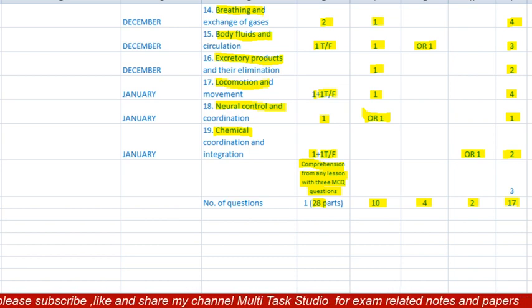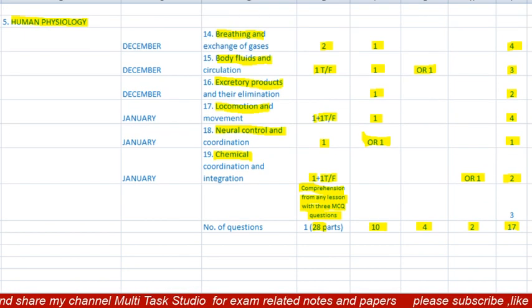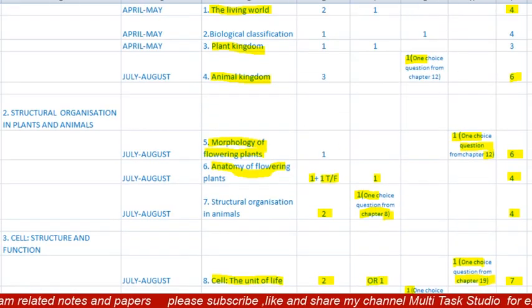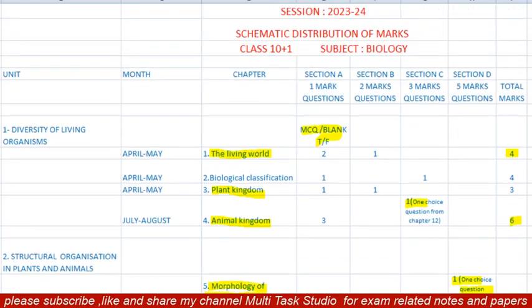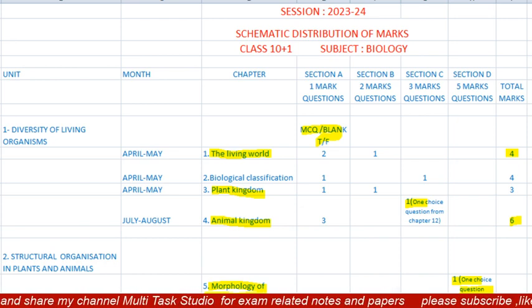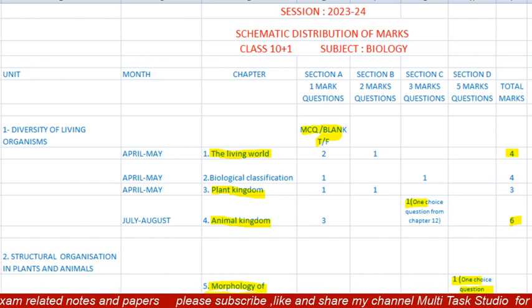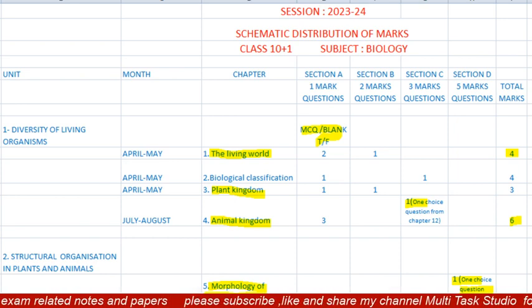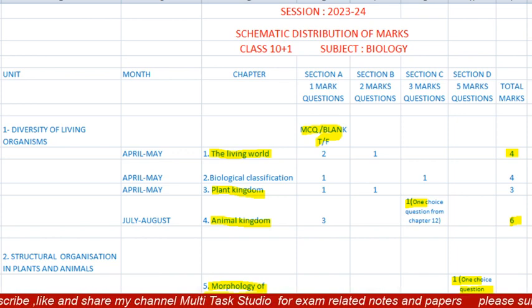In this way, the paper of 70 marks is completed. I hope you will now prepare using this method for the Class 11 Biology paper. Keep watching my channel Multitask Studio for further information regarding biology monthly exams and final exams. Important questions and notes will be available on my Telegram channel. Thank you.